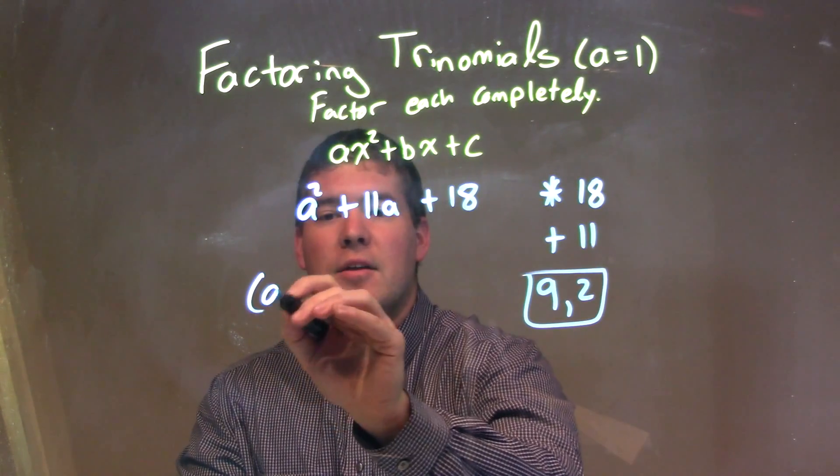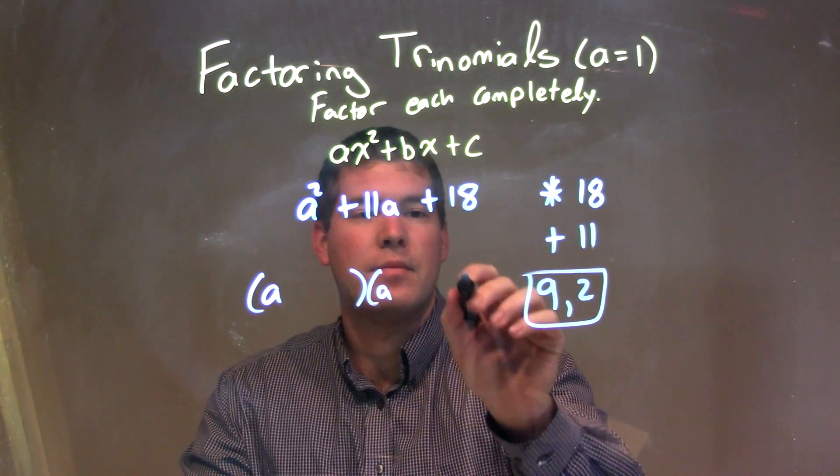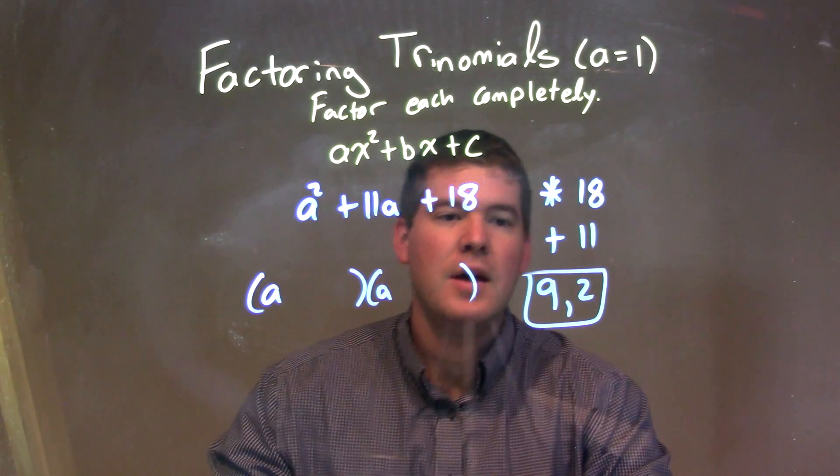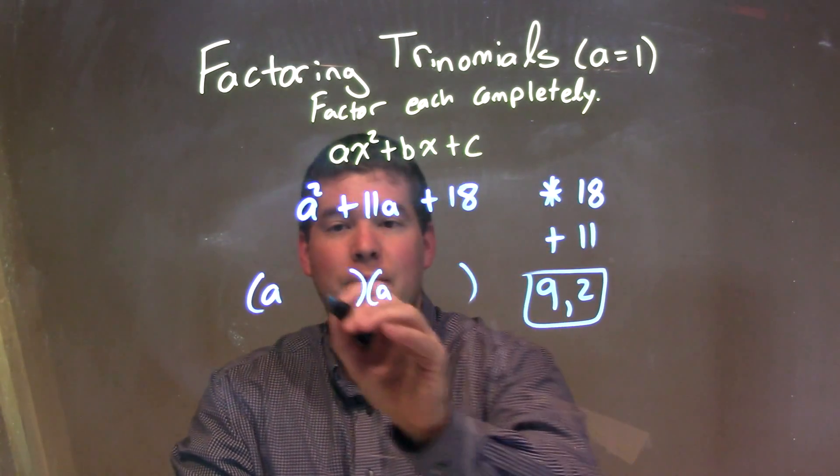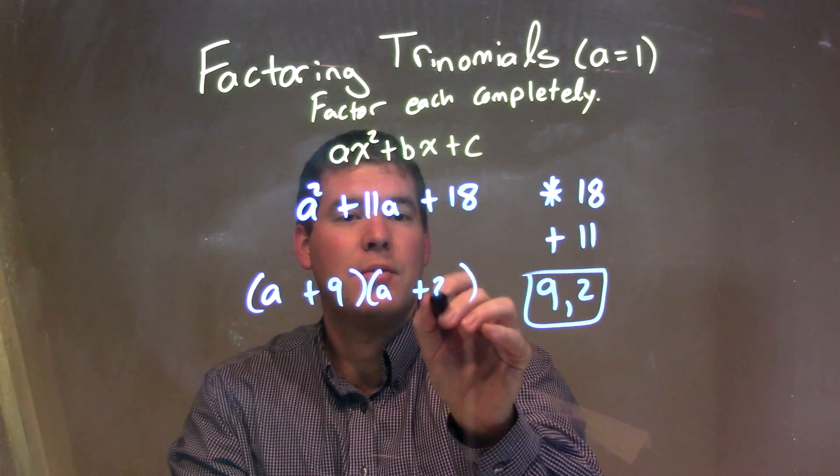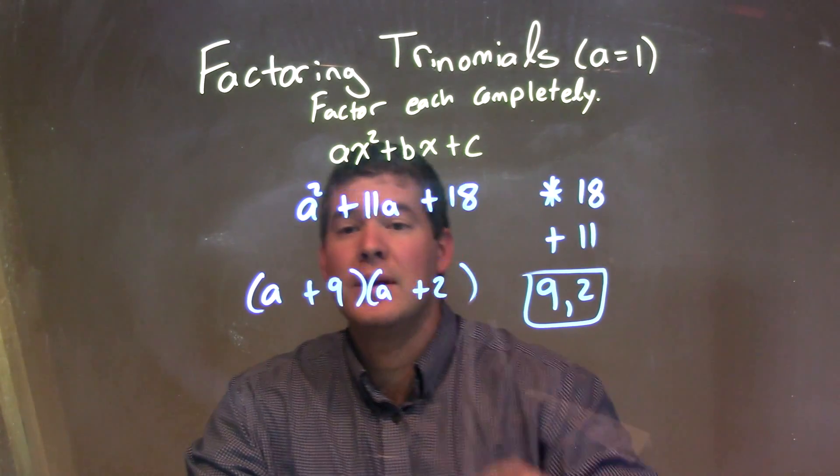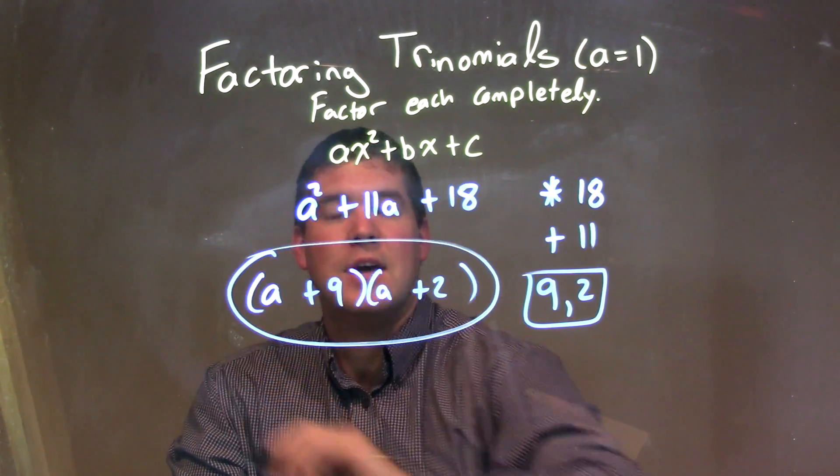Okay, so when I break this down into my factored form, I write my a's first, my parentheses, and then I just fill in the two numbers we have. a plus 9 here, a plus 2, and there we go. Our final answer being a plus 9 times a plus 2.